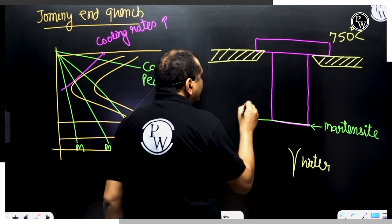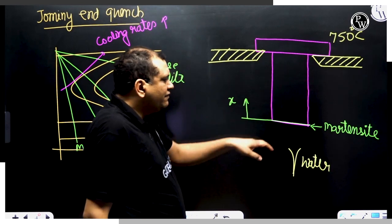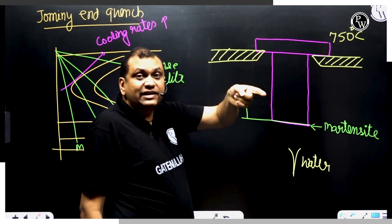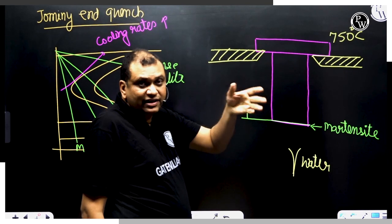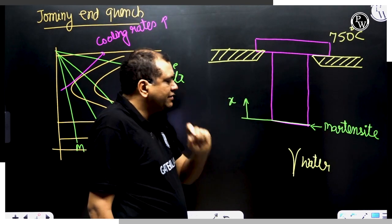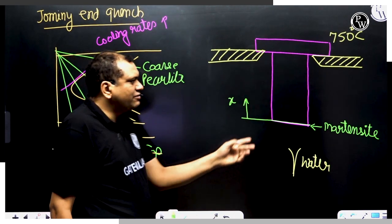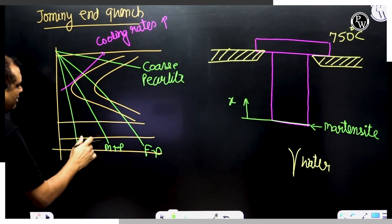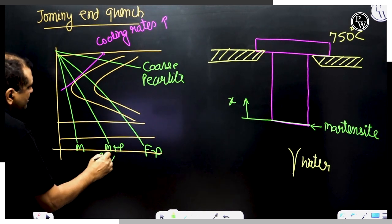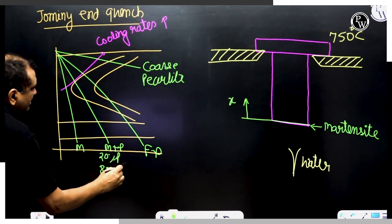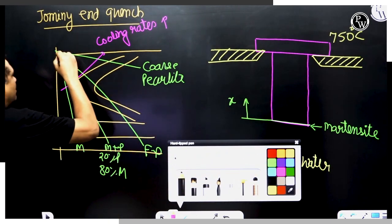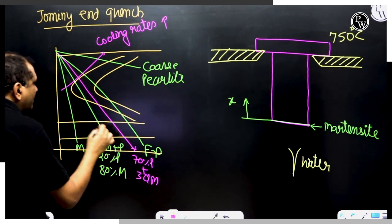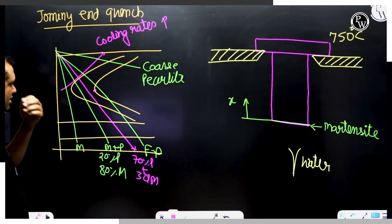As we go from the quenched end toward the other end of the sample — let's call this direction x — the cooling rate will decrease. The fastest cooling rate is at the free end. As we go away, lower cooling rates give, say, 20% ferrite and 80% martensite, then 70% ferrite and 30% martensite, and eventually 100% ferrite.